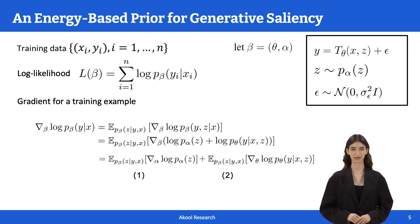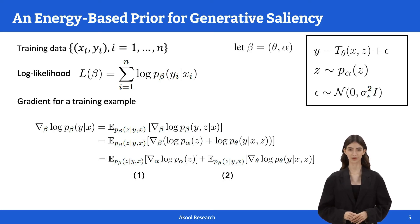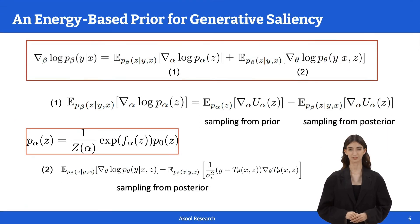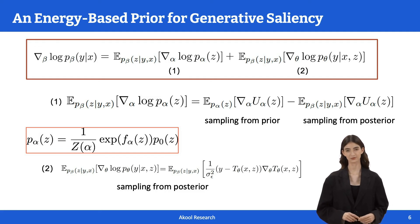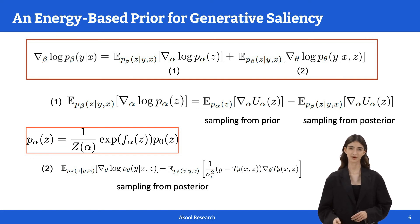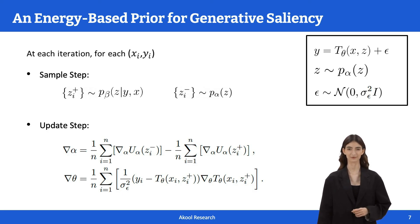For the energy-based prior model, we parameterize the energy function by a trainable deep network. We jointly train the parameters of the energy-based prior and the transformer network by maximum likelihood estimation. The key is to compute the gradient of the log likelihood with respect to the parameters, which can be decomposed into two intractable expectation terms. To estimate the learning gradients, we adopt Markov-chain Monte Carlo sampling to evaluate the intractable prior and posterior distributions of the latent variables and use the sample average to approximate the expectation. The learning algorithm alternates the sampling step and the model update step until convergence.